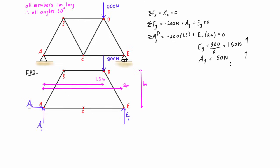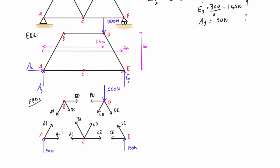Now we draw a free body diagram for each joint. I've drawn all unknown forces — the internal forces in the members — all in tension, so they're always pulling away from the point. For example, member AB: if it's in tension at A it pulls away from A, and also pulls away from B. This is just a sign convention: a positive result means tension, a negative magnitude means the member is actually in compression.